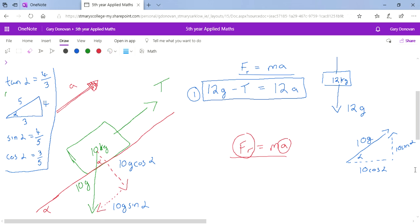So where does this bit come in? Well, if that's 10g cos alpha, that's the same as 10g multiplied by 3 over 5, which is 6g. And this would be 10g multiplied by 4 over 5, because sin alpha equals 4 over 5. So that's going to be 8g.